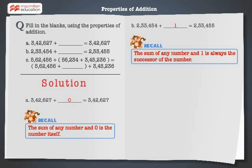Finally, let's solve the last problem. 5,62,456 plus 56,234 plus 3,45,236 is equal to 5,62,456 plus dash plus 3,45,236.